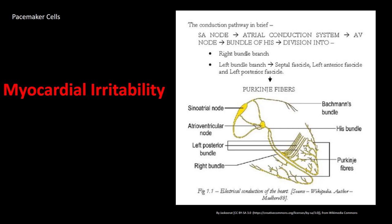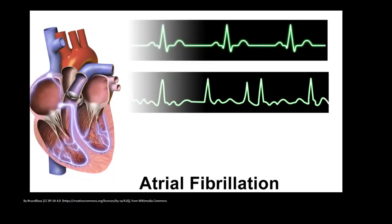This diagram depicts the conduction pathway of the heart. As we age, the pacemaker cells which carry electrical impulses throughout the heart decrease in number and become more irregular. This may lead to increased myocardial irritability and an increased likelihood of the development of arrhythmias. The top tracing on the EKG is normal whereas the bottom is an arrhythmia termed atrial fibrillation. I would not classify atrial fibrillation as a normal finding in an older adult, yet it does happen quite commonly.